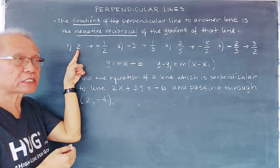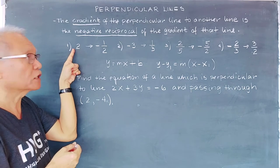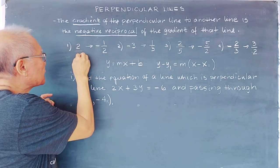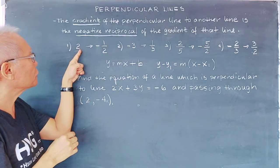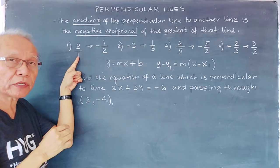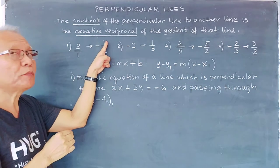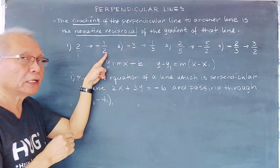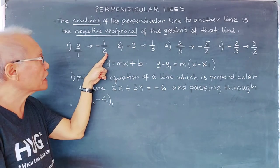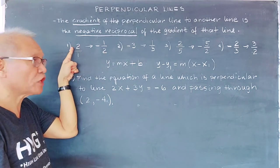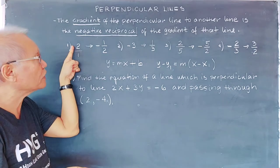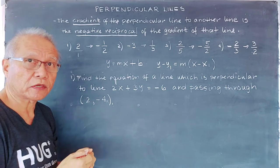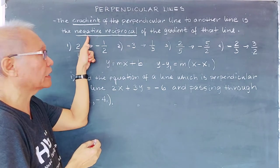If the slope of the first line is 2 — that's positive 2 — we put 1 here and get the reciprocal of 2. The reciprocal of 2: the denominator becomes the numerator, and the numerator becomes the denominator of the second line. Then we change the sign from positive to negative. If it is negative, we change it to positive. That is the meaning of negative reciprocal.